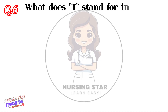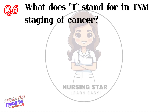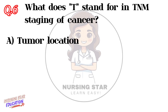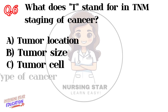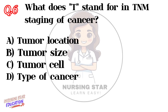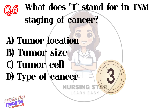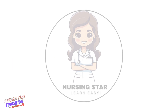Question number six: What does T stand for in TNM staging of cancer? Option A: Tumor location. Option B: Tumor size. Option C: Tumor cells. Option D: Type of cancer. Correct answer: B — Tumor size.